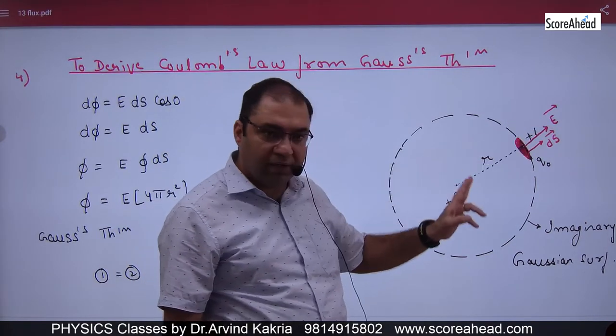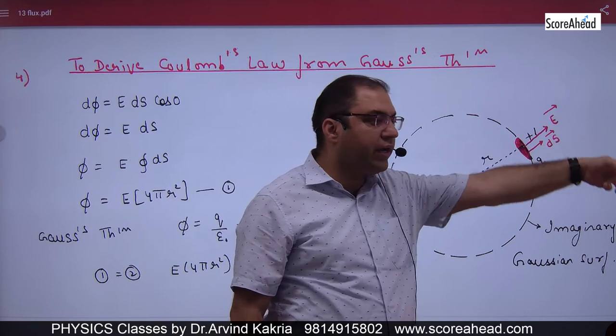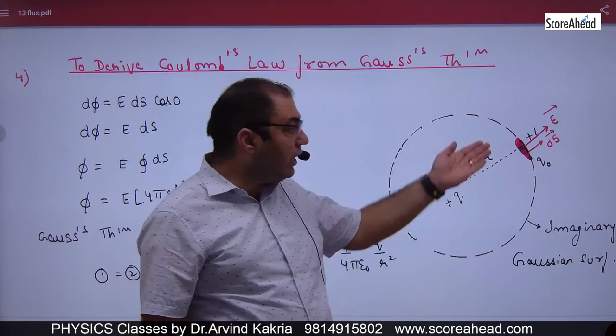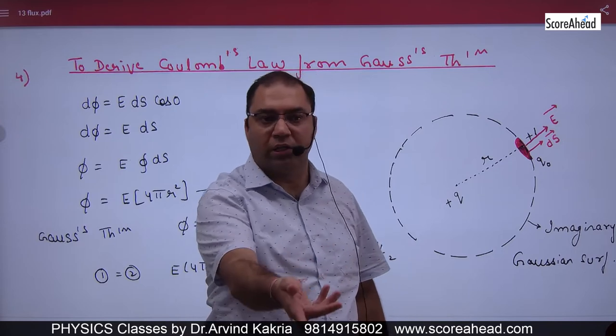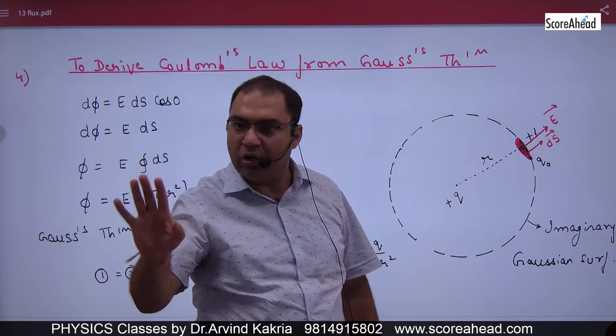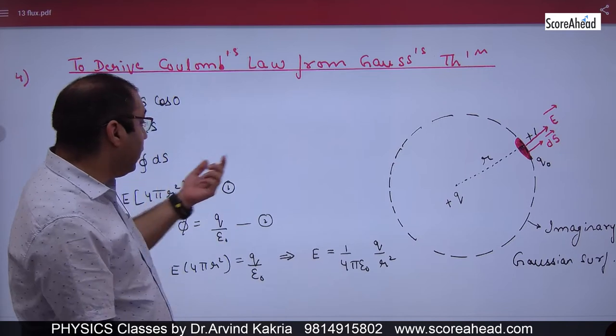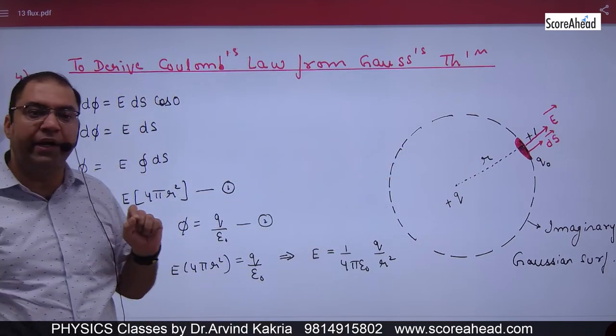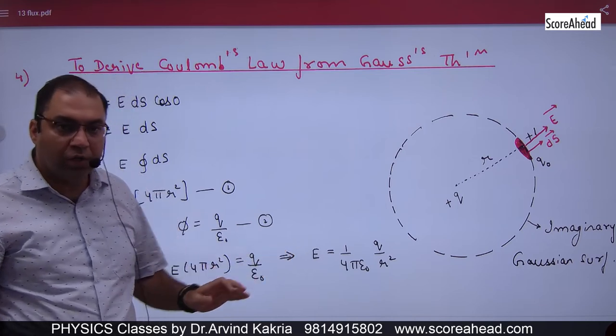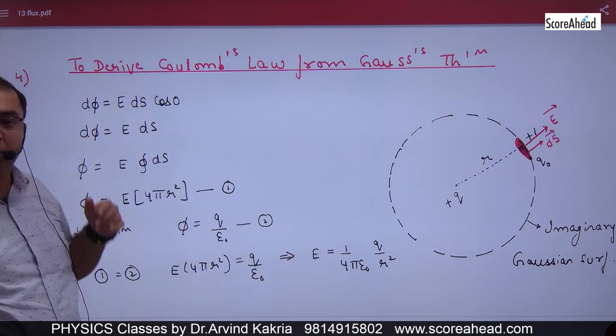And where E is, there is plus charge. So q plus will repel. So where will E vector be? Towards the right. So what will be the angle between E and ds? Zero. So d phi is equal to E ds cos zero. Cos zero is one.